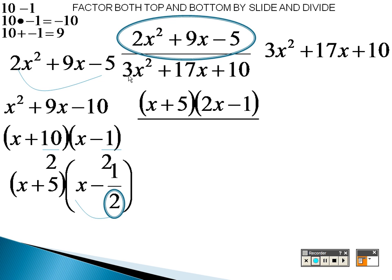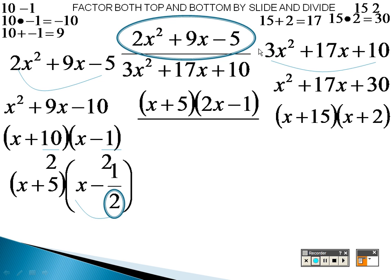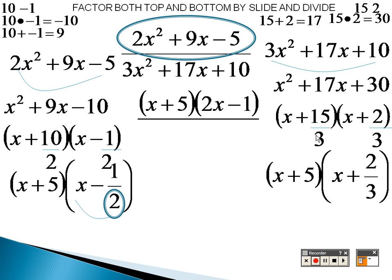On the bottom, I'm going to slide that 3 over, so that gives me a 30. What two numbers multiply to give me 30 that also add to give me 17? 15 and 2, because 15 times 2 is 30, and 15 plus 2 is 17. But because I slid by 3, I need to divide each of those by 3. 15 divided by 3 is 5, and the other is 2 thirds, but I can't have a fraction in a factor.